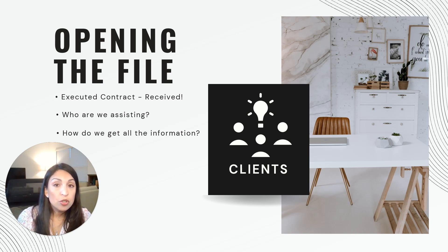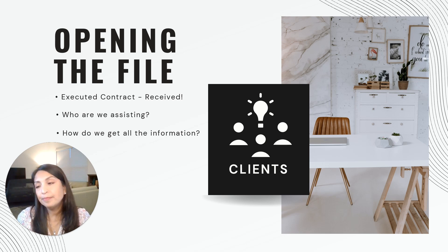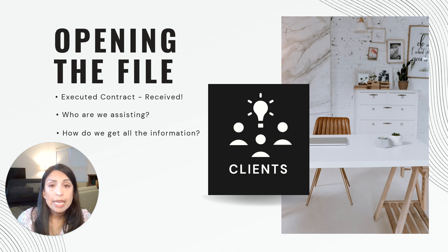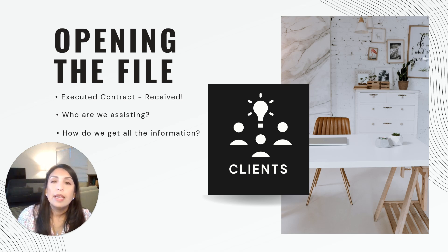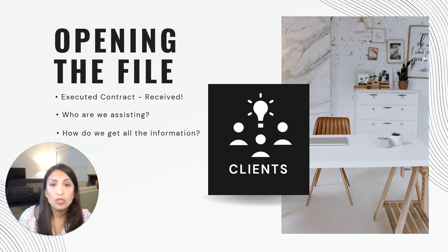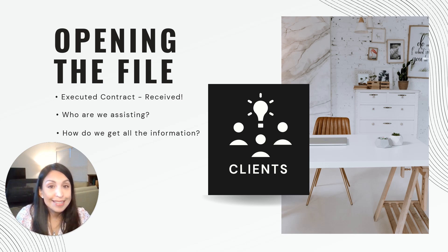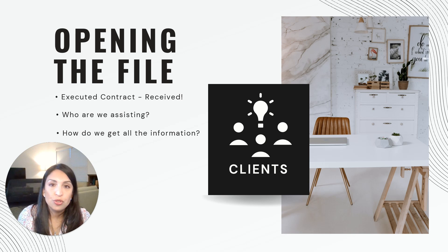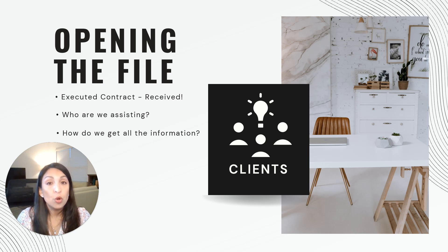Once you receive a copy of the contract, you're going to get a ton of information from there — the address, the seller and buyer's names, the other realtor's information, at least the name, and the terms. However, you're not going to have the contact information for your client's client. For example, if you're helping the listing agent, you might see the seller's name but not their phone number or email.